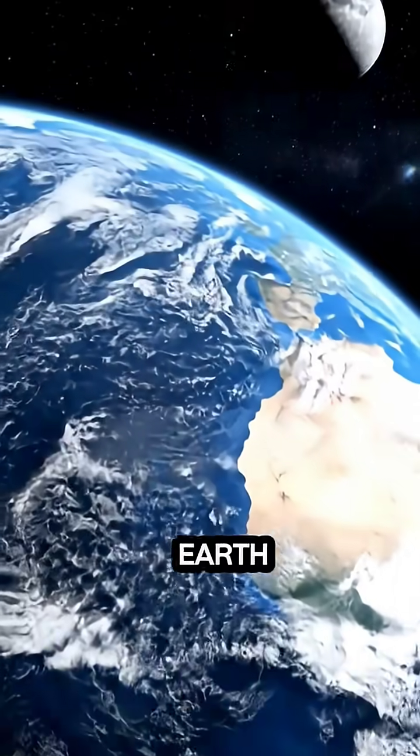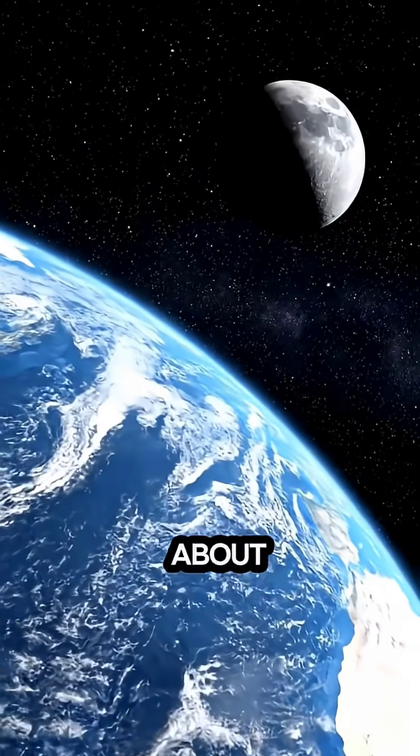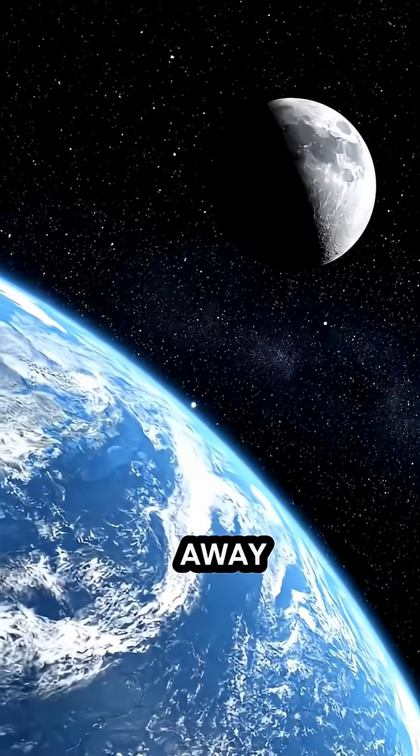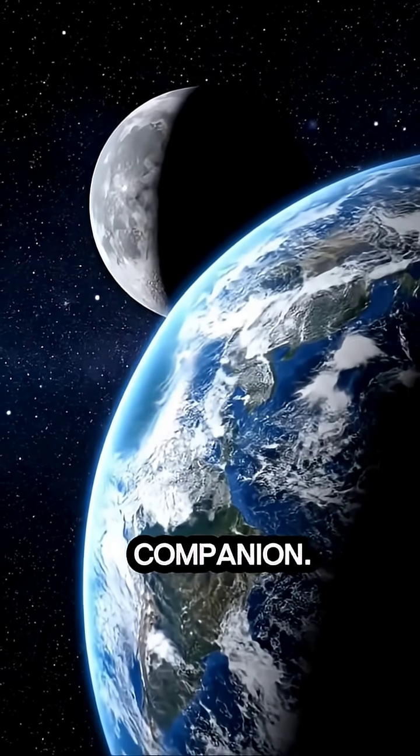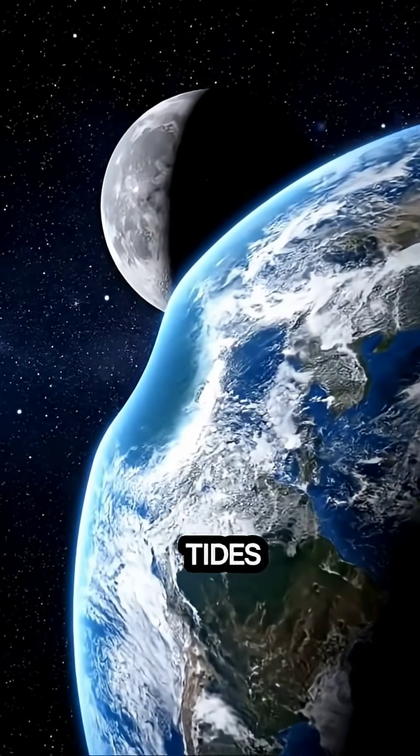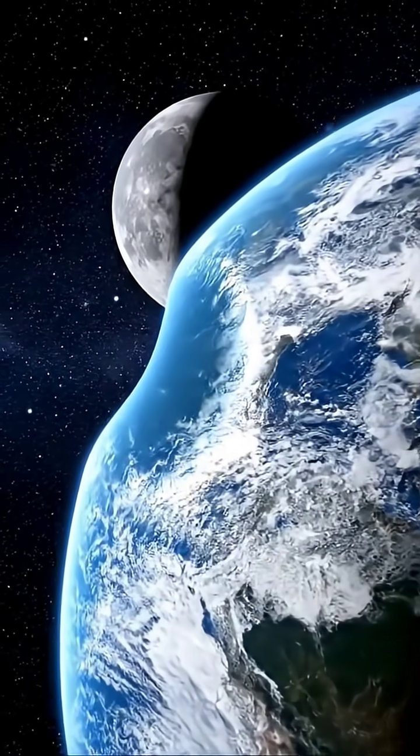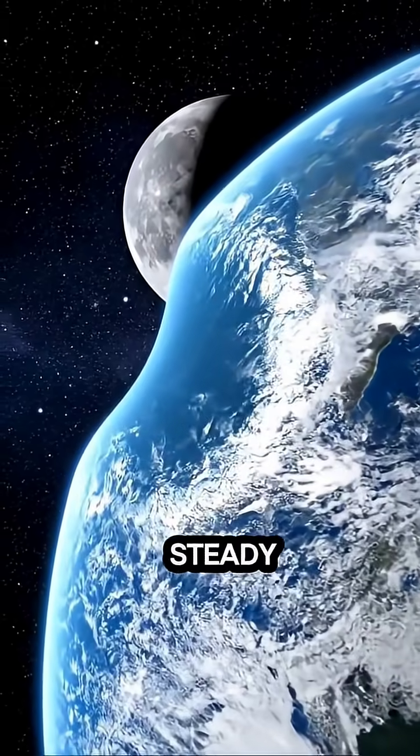Just beyond Earth drifts the Moon, about 384,400 kilometers away. Our constant companion. It shapes the ocean tides and stabilizes Earth's tilt, keeping our seasons steady through time.